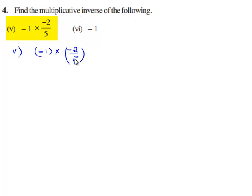Let us find the product of -1 times -2/5 first. This is equal to -1/1 times -2/5. Here we multiply the numerator and denominator of both rational numbers respectively, and we get -1 times -2 gives 2 by 5 times 1 gives 5.